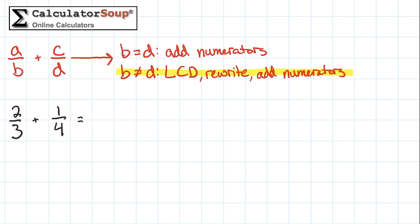The LCD of 3 and 4 is 12, so we will write these fractions as equivalent fractions with 12 as the denominator. To find the equivalent fraction, multiply both the numerator and denominator of each fraction by the same number so that we get 12 as the denominator. For the first fraction, we will multiply both the numerator and denominator by 4. To find the equivalent fraction of 1/4, multiply the numerator and denominator by 3.